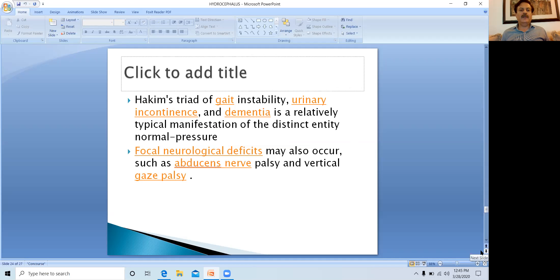Hakim's triad of gait instability, gait apraxia, urinary incontinence, and dementia is a relatively typical manifestation of normal pressure hydrocephalus. Focal neurological deficits such as abducens nerve palsy, sixth nerve palsy, or vertical gaze palsy may also be associated.